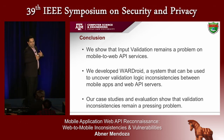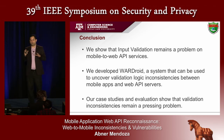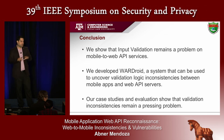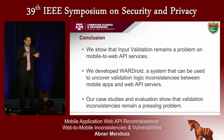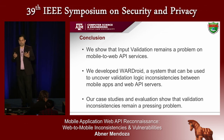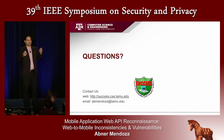In conclusion, we show that input validation remains a problem in mobile-to-web API services and in this integration of mobile and web. We developed Wardroid, a system that can be used to uncover these types of validation inconsistencies in a semi-automatic way. We highlight case studies and our validation shows that inconsistencies in validation logic — particularly server-side validation logic — remain a pressing problem. Thank you for your time, and we'll be happy to welcome some questions.